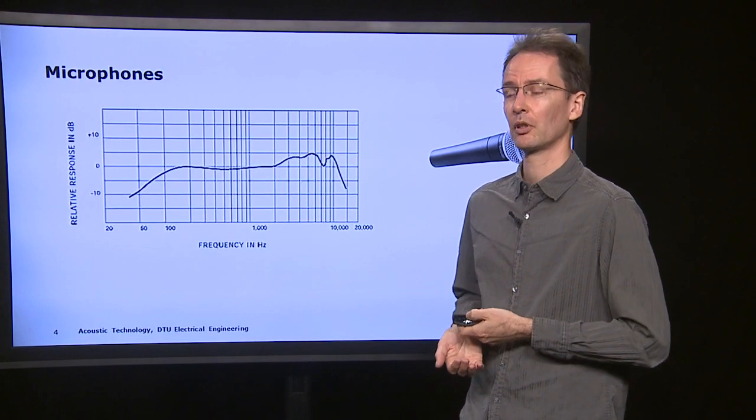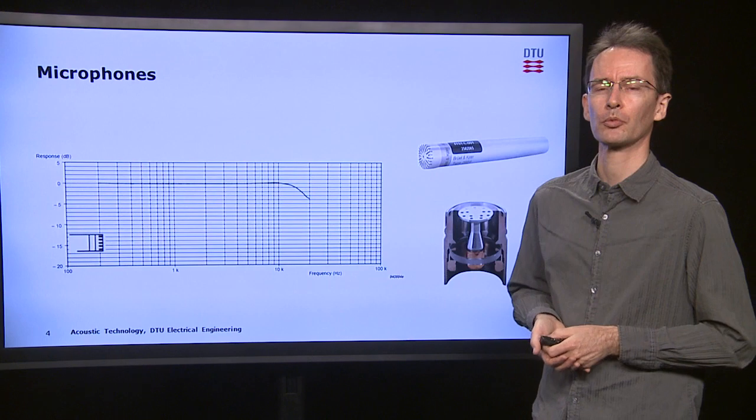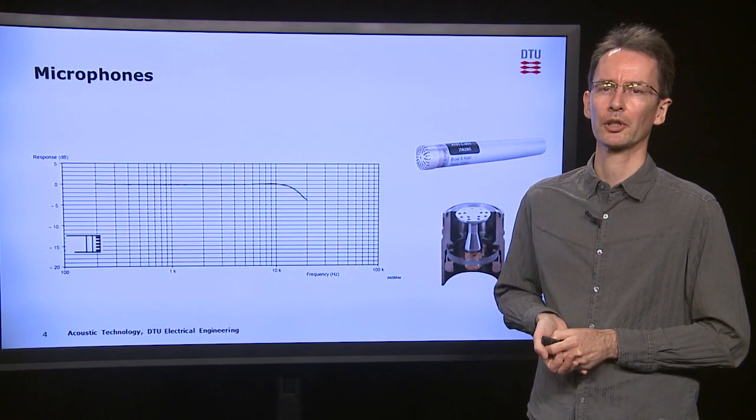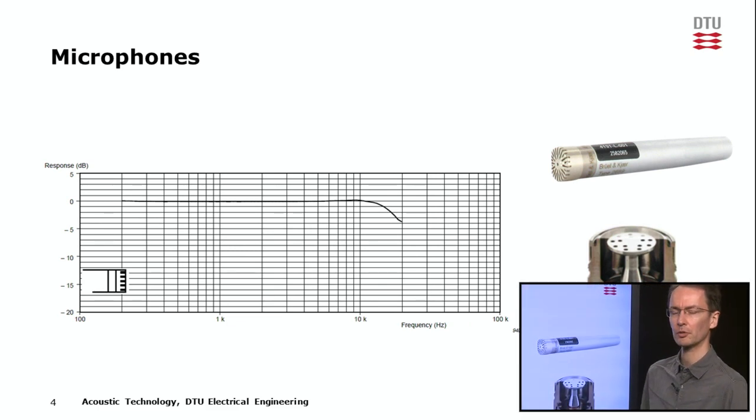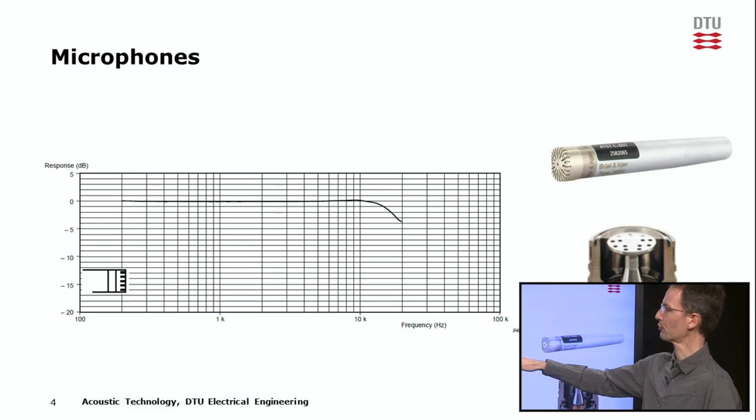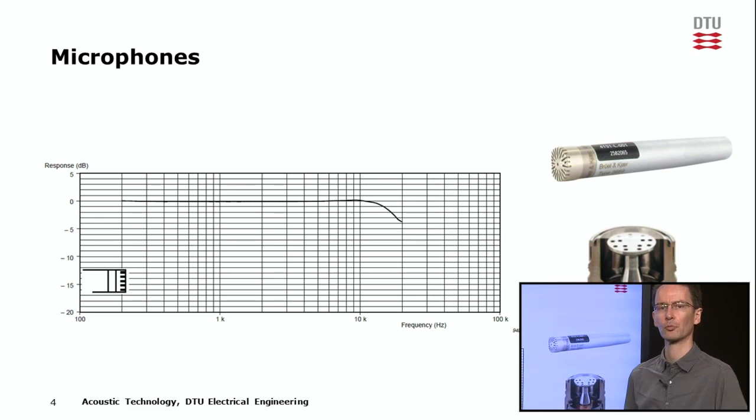In other cases, when you want to measure noise from a highway or industrial complex, you definitely want a microphone that does not color the sound. Here's an example from a well-known Danish manufacturer. We can see that the frequency response is very flat, so this microphone is very neutral. That's what you want from a measurement microphone.